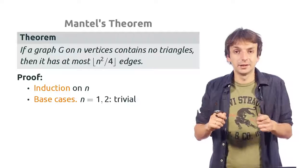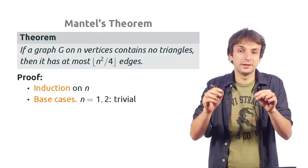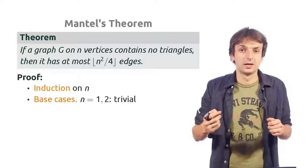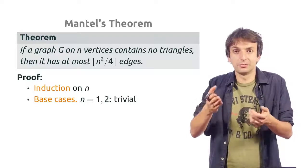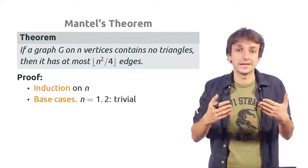When n equals 2, then a graph on 2 vertices can contain at most 1 edge. And the floor of n squared over 4 is exactly 1. So both base cases hold.